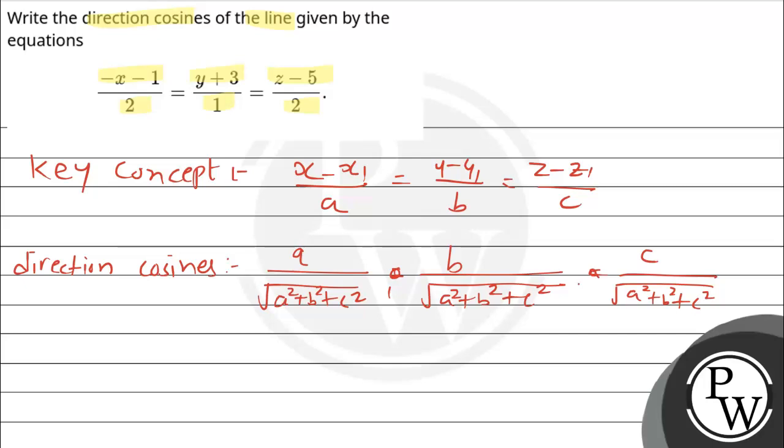Direction cosines are three values because there are three axes, so there will be three angles: X, Y and Z. So we have three direction cosines. Let's start. First of all, we have to take this form.